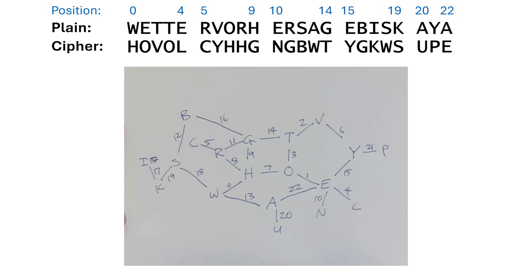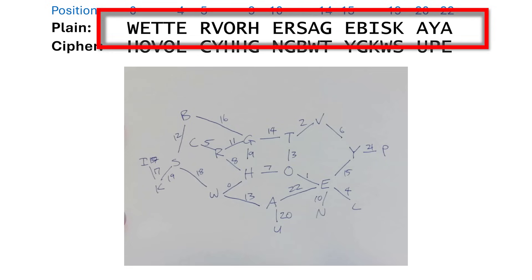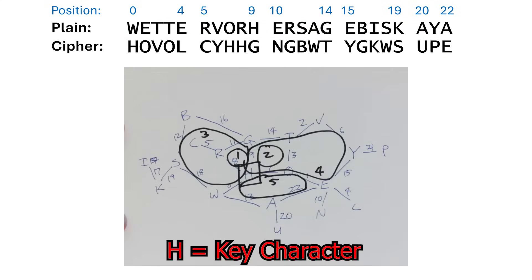In the last video, we saw that generating a diagram of the mapping between the crib or guest piece of text and the cipher text led to the discovery of these loops.